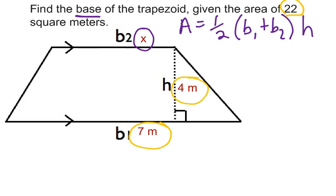So I'm going to plug in 22 for the area. Equals half stays the same. Base 1 is 7. 7 plus base 2, which I don't know. So I'm just going to use x. Times the height, which is 4.